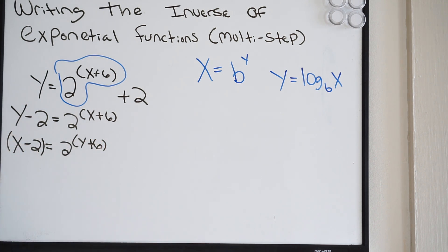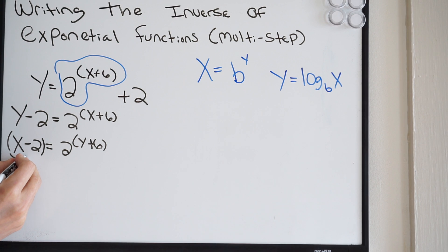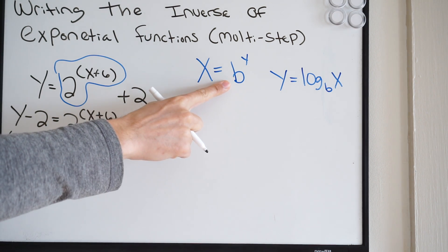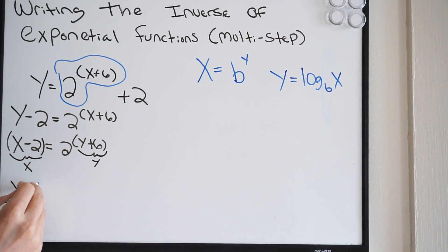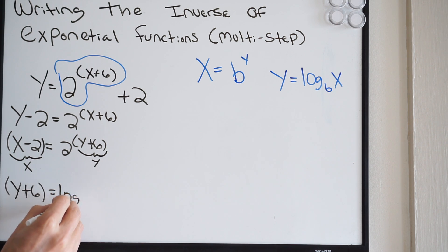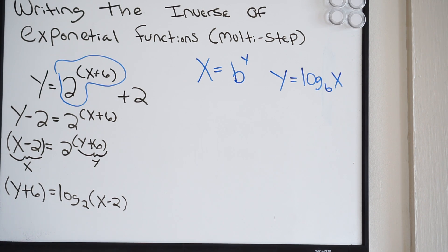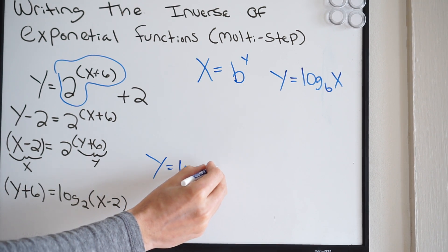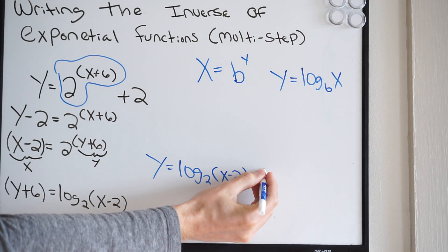Looking at the exponential form of a log, this whole part is my x and this whole part is my y. Going from exponential to log form, we can rewrite this as y plus 6 equals log base 2 of (x minus 2). Our last step is to subtract 6, so our final answer is y equals log base 2 of (x minus 2) minus 6.